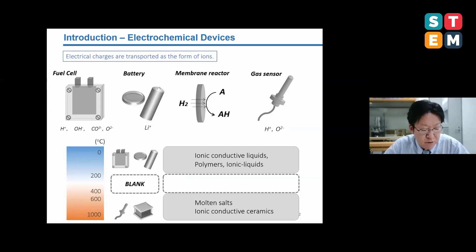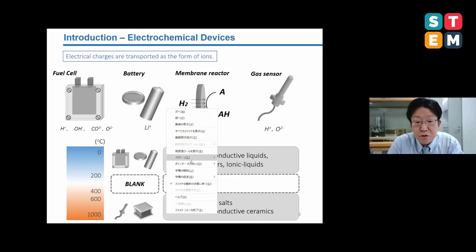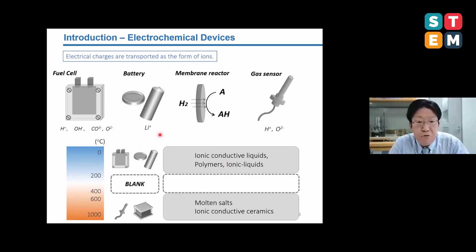Our group is focusing on electrochemical devices. Ionic conducting materials are used in many electrochemical devices such as fuel cells, batteries, membrane reactors, gas sensors and capacitors. In these devices, the electrochemical charges are transported in the form of ions. For example, in lithium ion batteries, the lithium ions migrate through the electrolyte. If we classify these devices by the operating temperatures, we can find a blank of devices between 200 and 400 degrees.